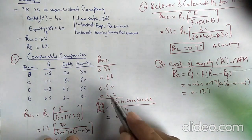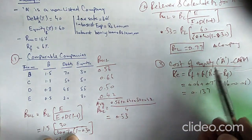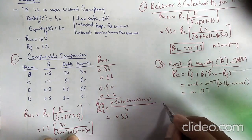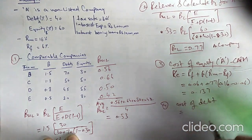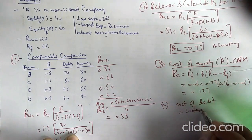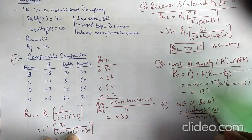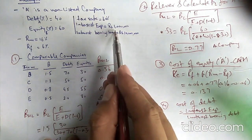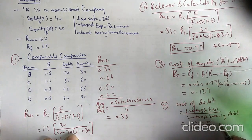First, calculate unlevered beta for comparables, then average it, then use that average to calculate the levered beta for A, and apply CAPM for the cost of equity. At the fourth step, we calculate the cost of debt. The formula is: Cost of Debt = Interest Expense / Interest-Bearing Debt. Interest expense is 1 million and interest-bearing debt is 10 million, so cost of debt = 10%, i.e., 0.10.